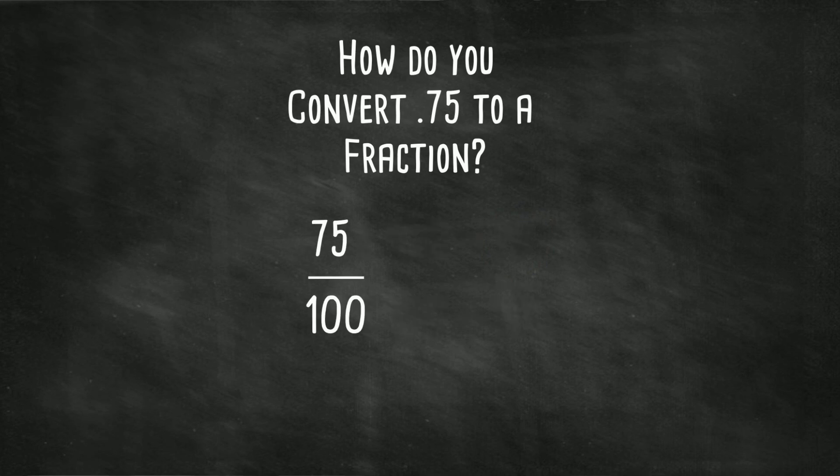Twenty-five goes into both seventy-five and one hundred. Seventy-five divided by twenty-five is three. One hundred divided by twenty-five is four. So there we go. The fraction is three-fourths.